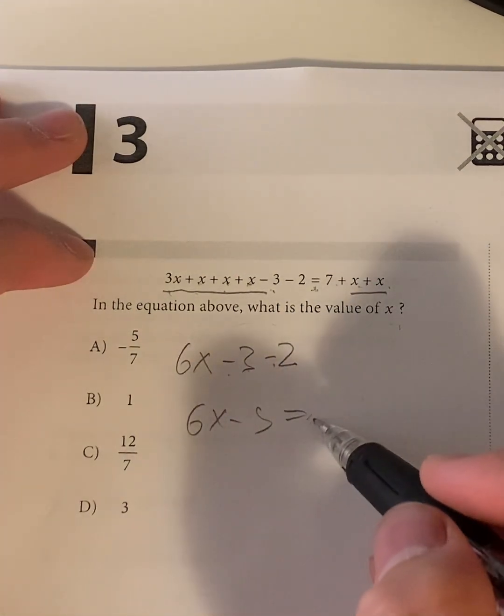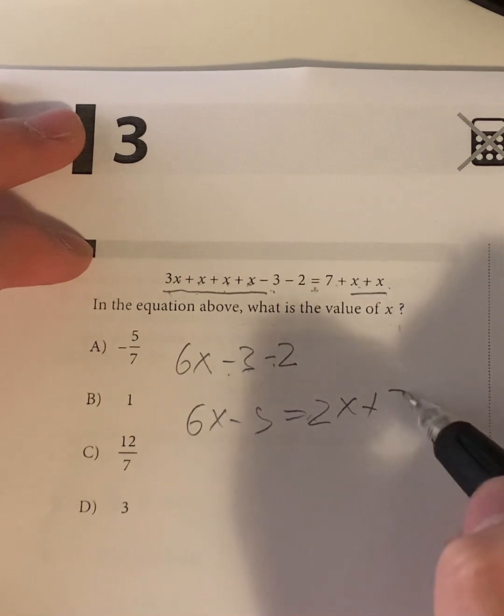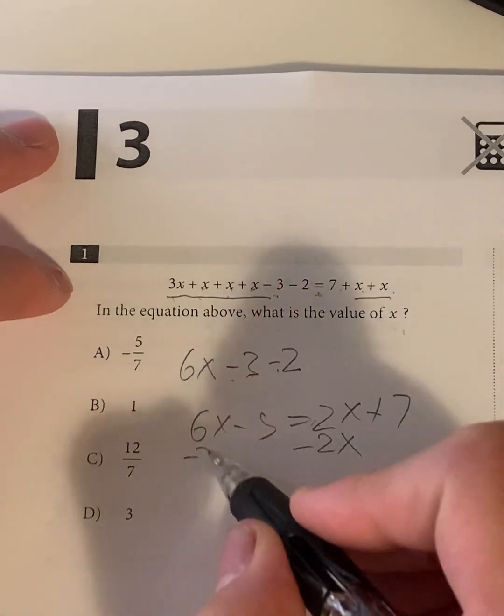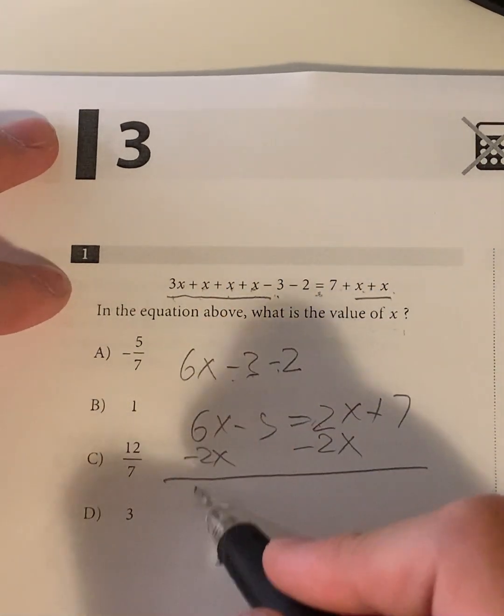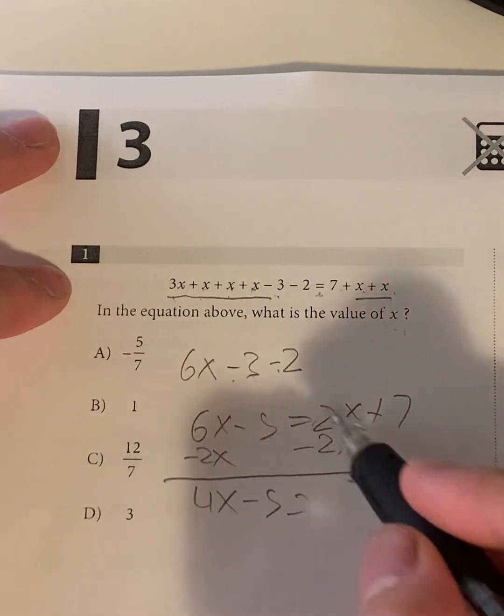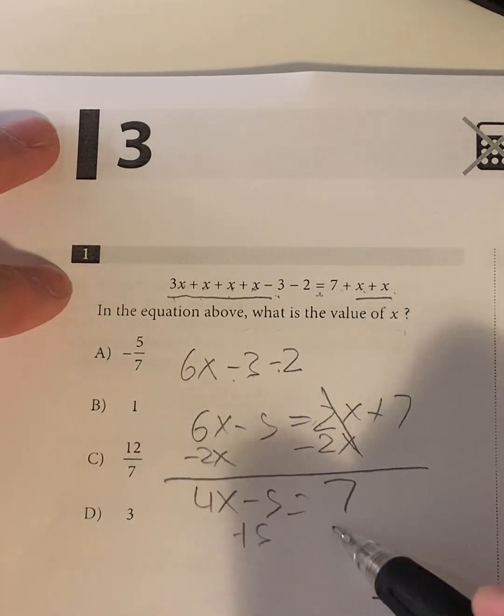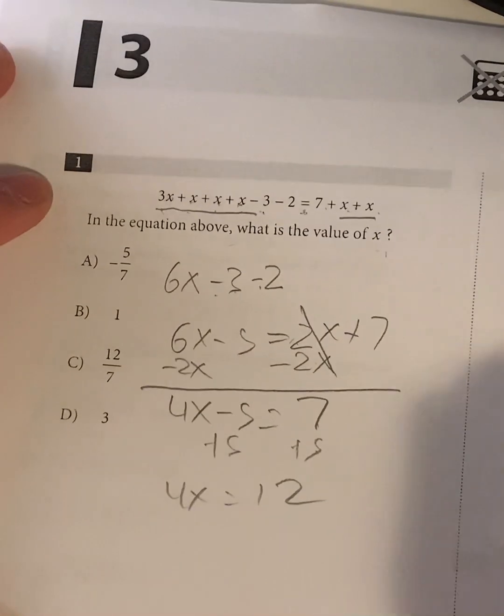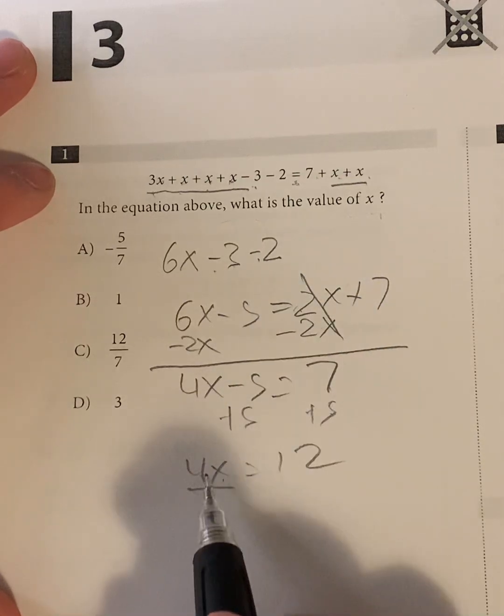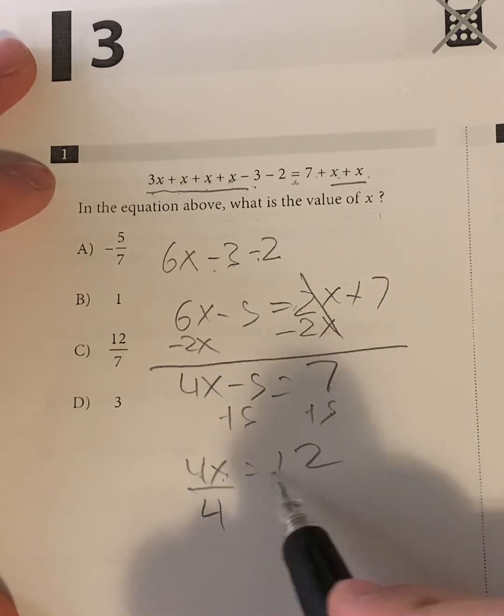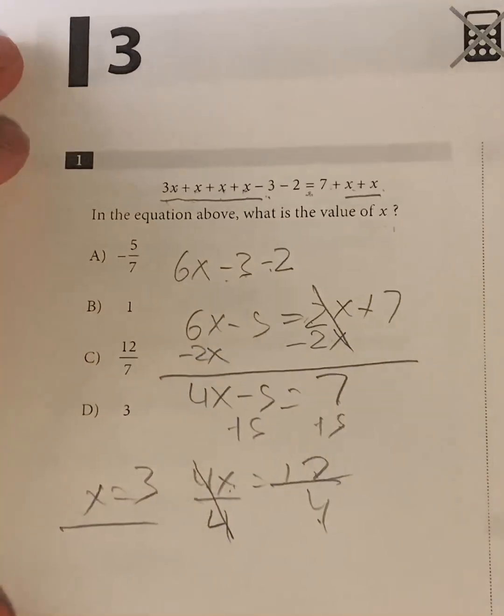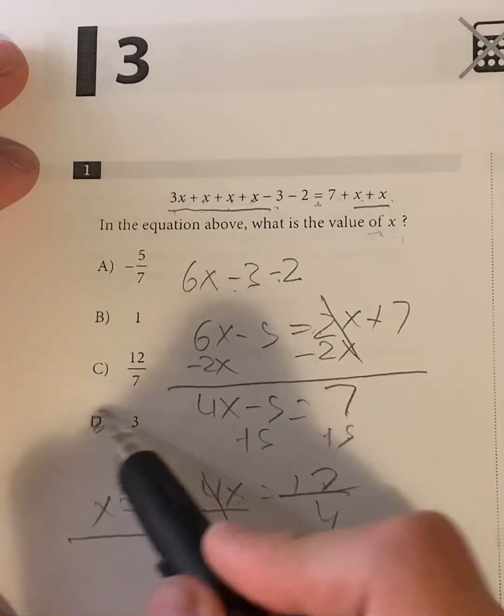So on this side, the right-hand side is 2x plus 7. And now let's move everything to one side. Usually I move the smaller x value. So in this case, 2x is a little higher. We move it by subtracting. Subtracting gives us 4x minus 5 is equal to 2x minus 2x cancels out. That's equal to 7. Add 5 on both sides, giving us 4x is equal to 7 plus 5, which is 12. And then we divide both sides by 4 because opposite of multiplication is division. x is equal to 12 divided by 4, which is the answer for the value of x has to be C.